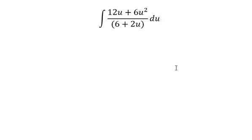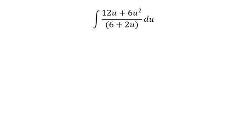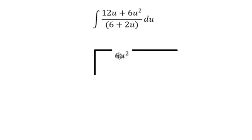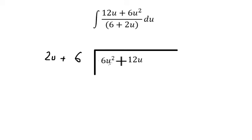Now we need to do long division. Long division should be like this — we put this one first, then later we have 12u, and we put our positive term here. So we have 2u plus 6. We want to go about 6u squared, which means we multiply with 3u, giving 6u squared plus 18u. Then we subtract the two equations together.